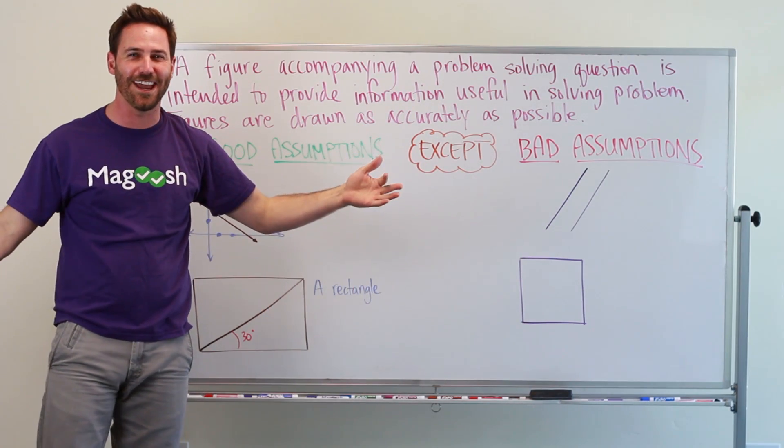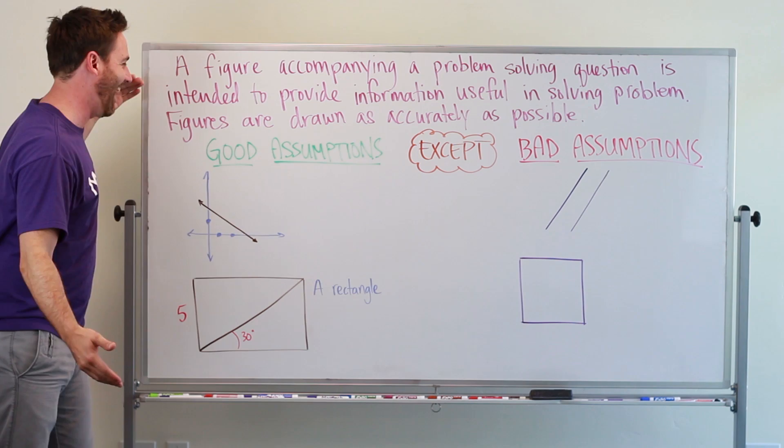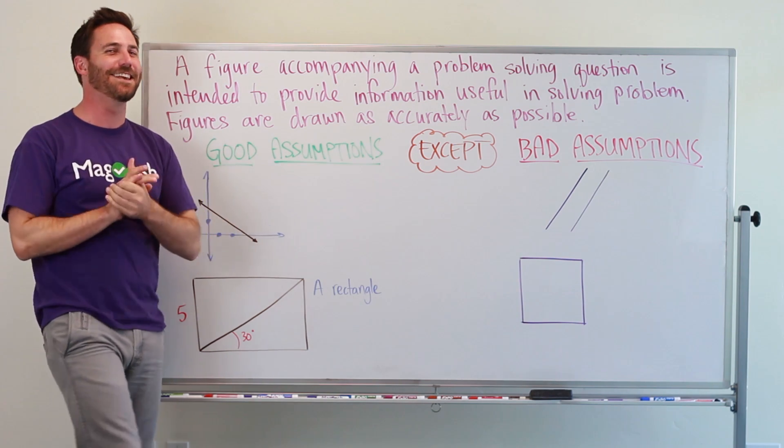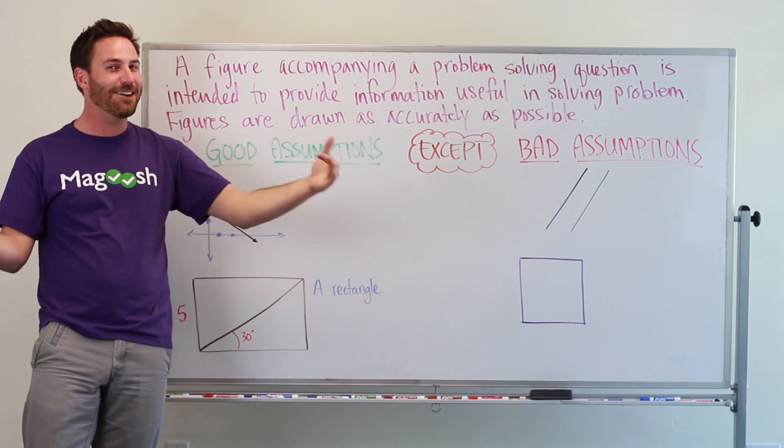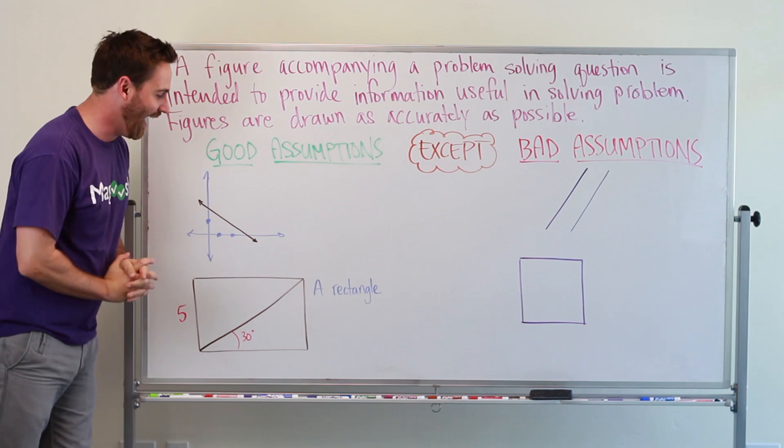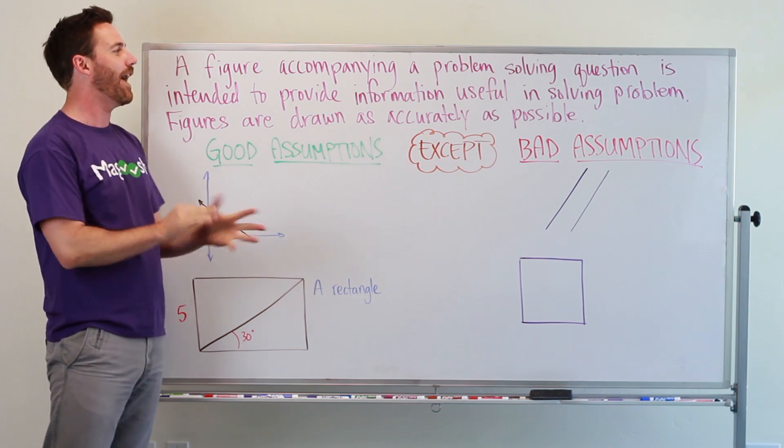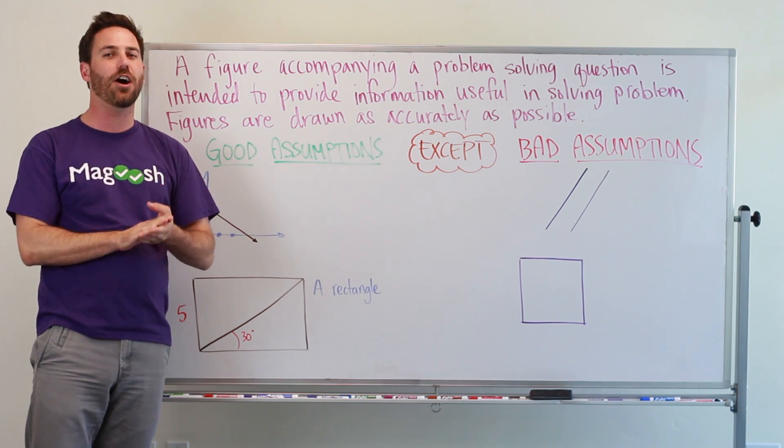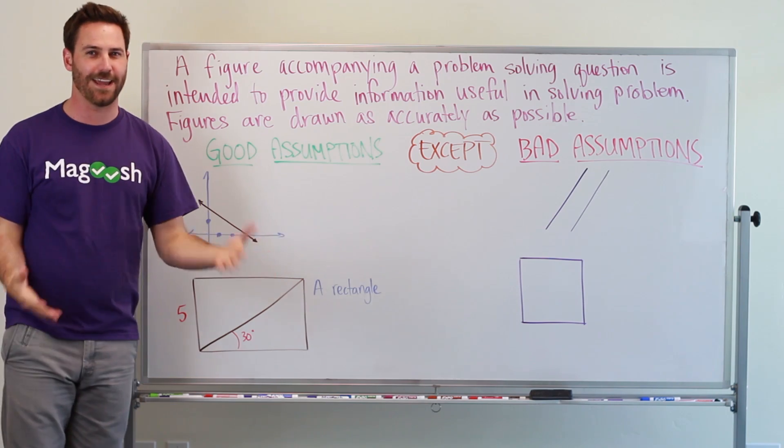Hi, it's Tuesday, and I'm Kevin, and we're back in GMAT Tuesdays. Today, like I said, we're working on problem solving and specifically talking about how figures are drawn as accurately as possible.